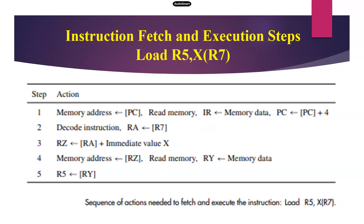The second example: LOAD R3, X(R7). For the load instruction, we have to use all five steps. For R format instructions we use only four steps, but for the load memory instruction, compulsorily all five steps are required. We need to fetch the data from memory — the data is X(R7), which is available in main memory, not directly but indirectly, so we need to calculate the memory address.